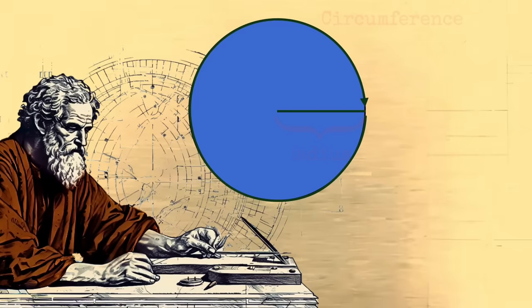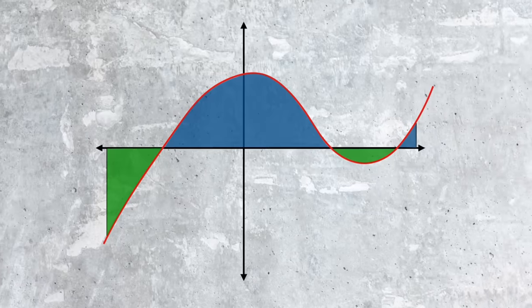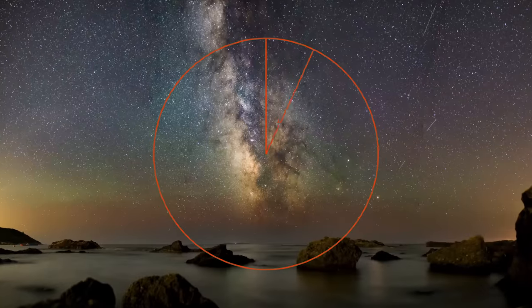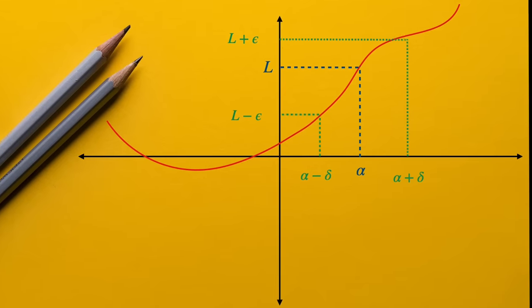In the 3rd century BC, Archimedes proved the area formula for a circle. His method harnessed the power of infinity in a way that would set the stage for calculus to emerge nearly 2,000 years later, but it also revealed a paradox at the heart of math that wasn't addressed rigorously until the 1800s.